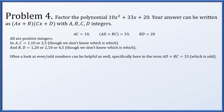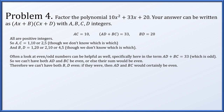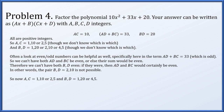Since ad plus bc equals 33, an odd number, ad and bc cannot both be even. This rules out the pair 2 and 10 for b and d. Looking at parity, in the expression ad plus bc, odds must multiply odds and evens must multiply evens so that we get one odd and one even whose sum could be 33. Either a and c are 1 and 10 or 2 and 5. And b and d could be the pair 1 and 20 or 4 and 5.